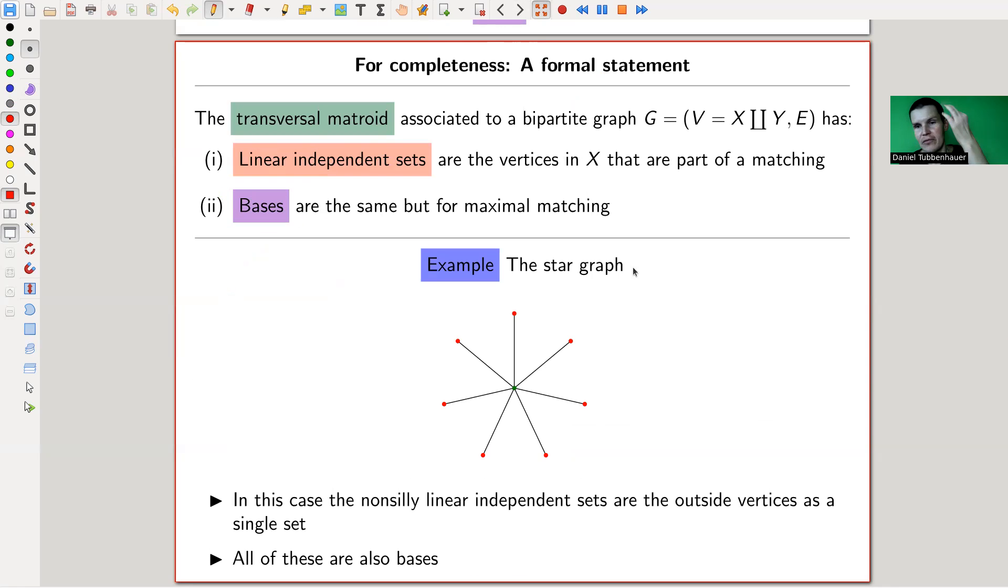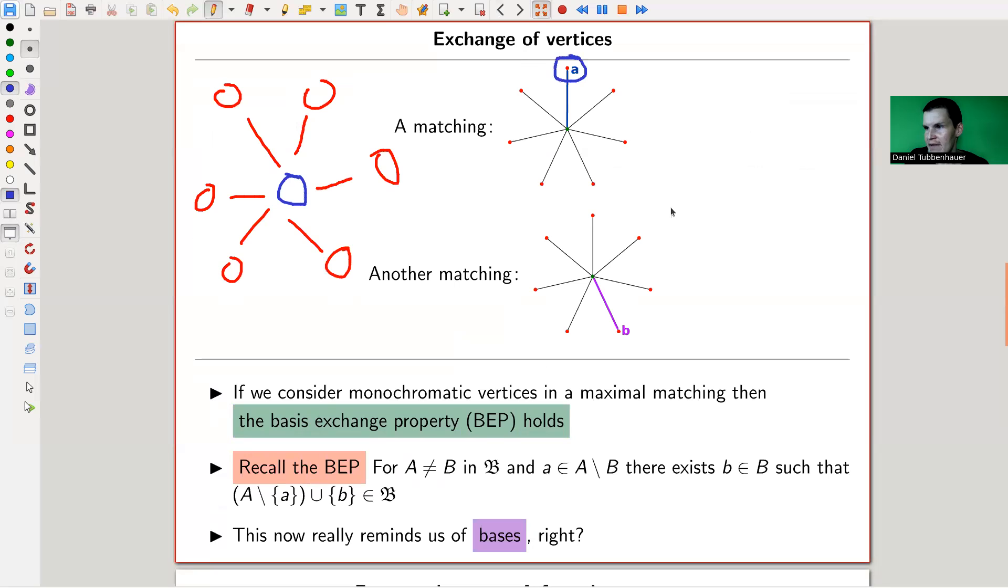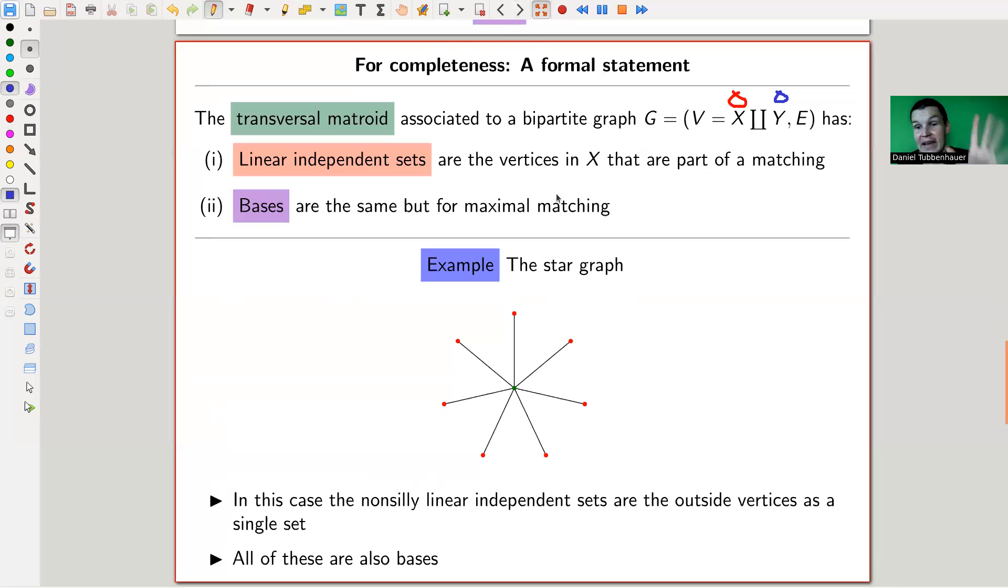So transversal matroid is really just, you have a graph and it has, well, let's say red vertices and blue vertices and some edges between them, the usual bipartite graph. And we just take the linear dependent sets as the vertices in X. So you kind of need to just take one of them. That's where the bipartite comes in. And then they're part of a matching. So here, well, I did it red. So here, for example, this one is part of a matching and this one is part of a matching. So this is, sorry, this is linear dependent in this case. And the bases are the maximal ones. So in the star graph, well, there are only the only bases are exactly the different vertices and there are no non-trivial linear dependent sets. So everything is a basis in this case, but this works and it's kind of fun.